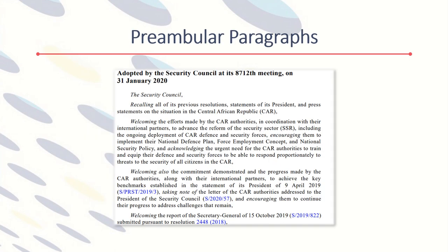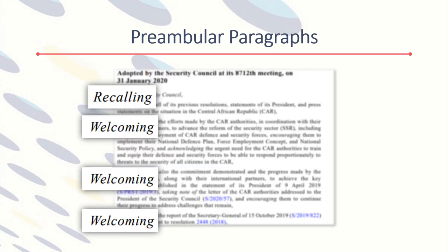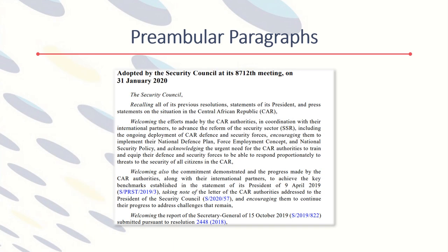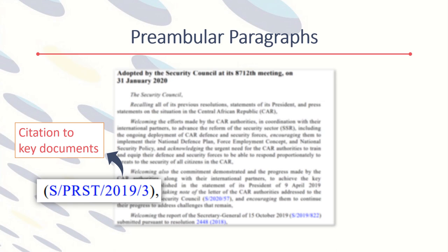The first part of the text of resolutions is called the preamble. The preambular paragraphs begin with verbs ending in '-ing.' The preamble often cites documents and resolutions that the Council considered during its deliberations. The cited documents are usually linked and displayed in blue. These citations are often helpful for researchers to learn more about the previous decisions, reports, and related materials.